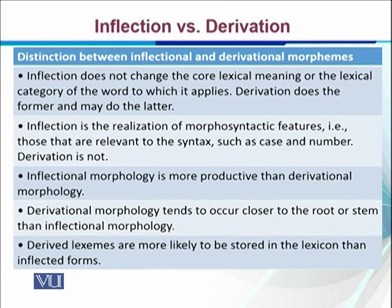Inflectional morphology is more productive than derivational morphology — with inflection we can generate many different word forms. Derivational morphology has a lesser role in this regard. Additionally, derivational morphology tends to occur closer to the root or stem than inflectional morphology.